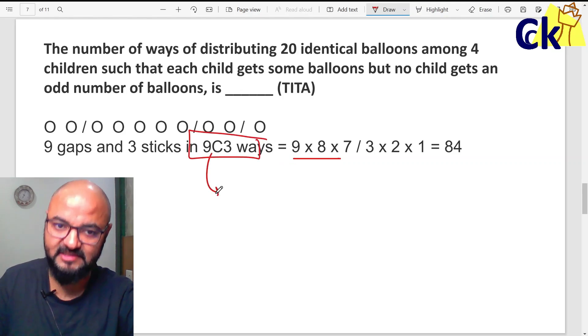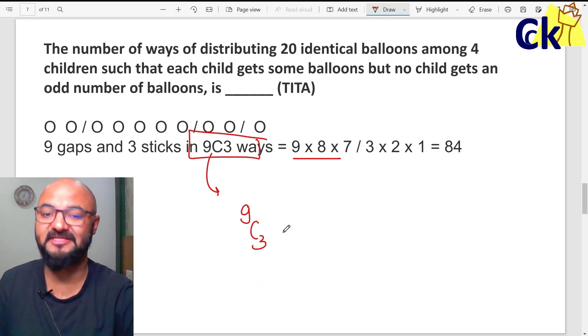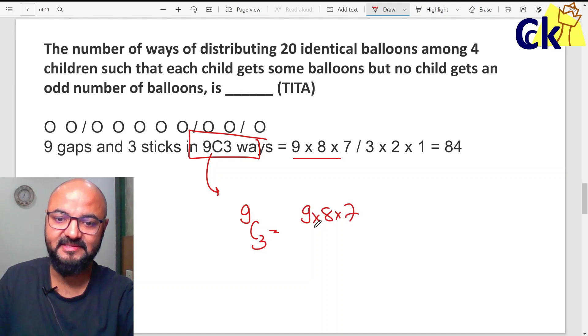9C3 ways. 9C3 calculation is very simple. 9 ko likha 3 baar: 9, 8, 7, and same way 3 ko likha 3 baar: 3, 2, 1. Ek ke kam karate karte. We cut a bit karke, answer comes out to be 84. Method number 1.